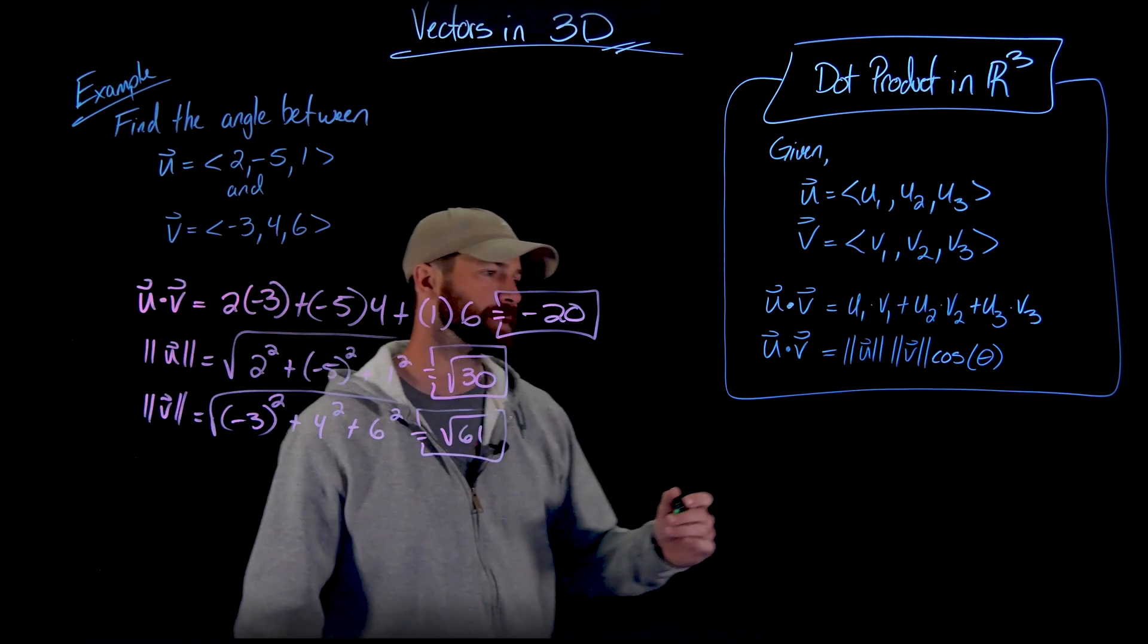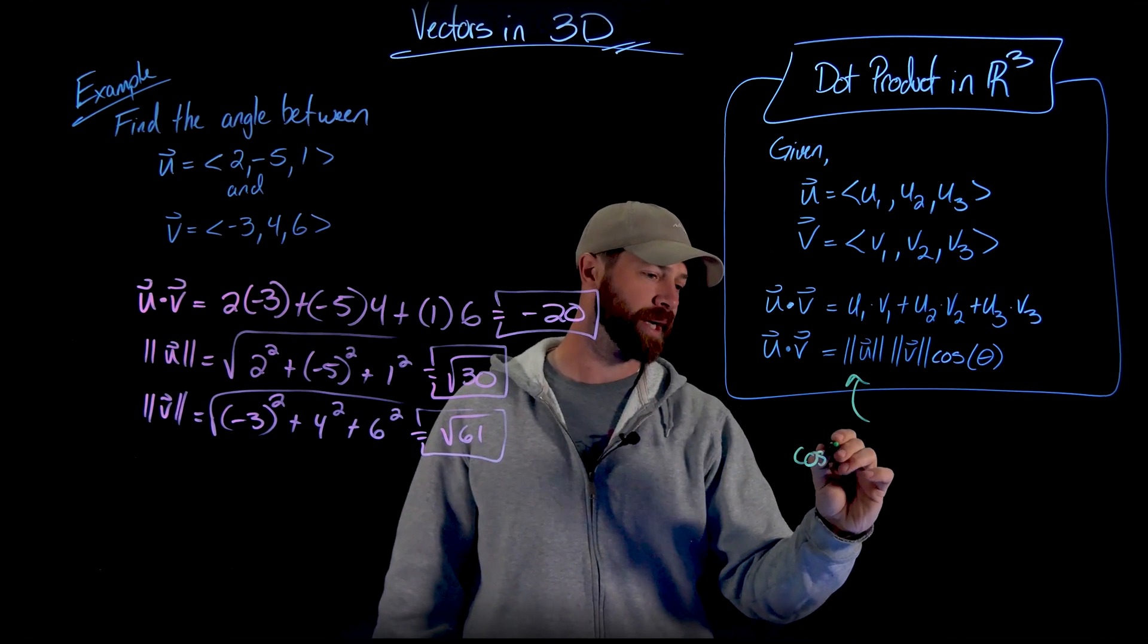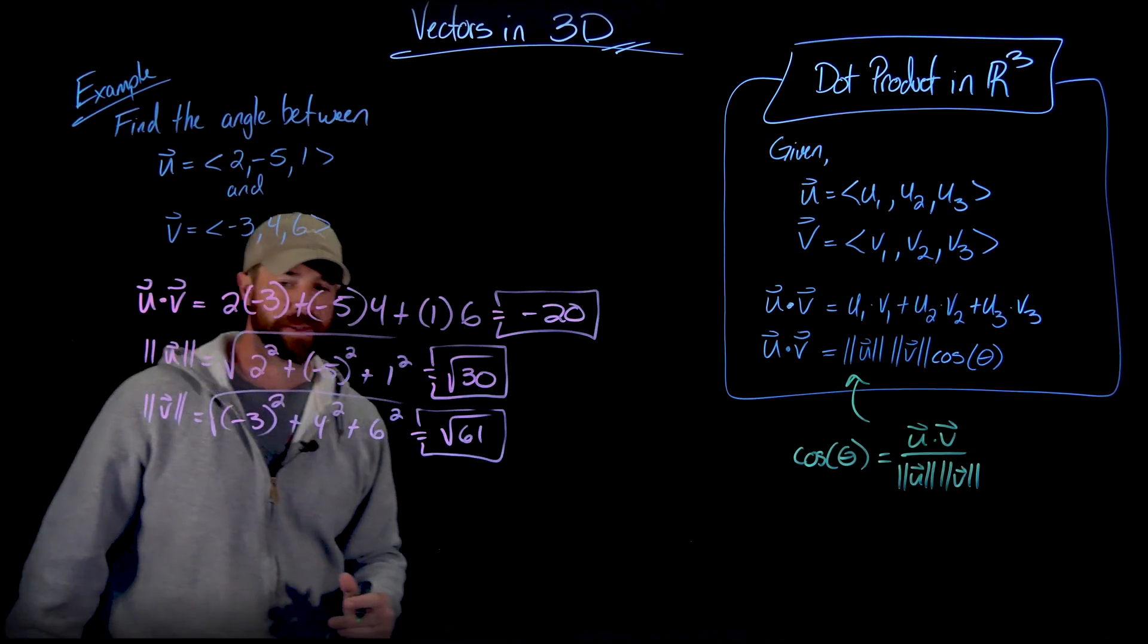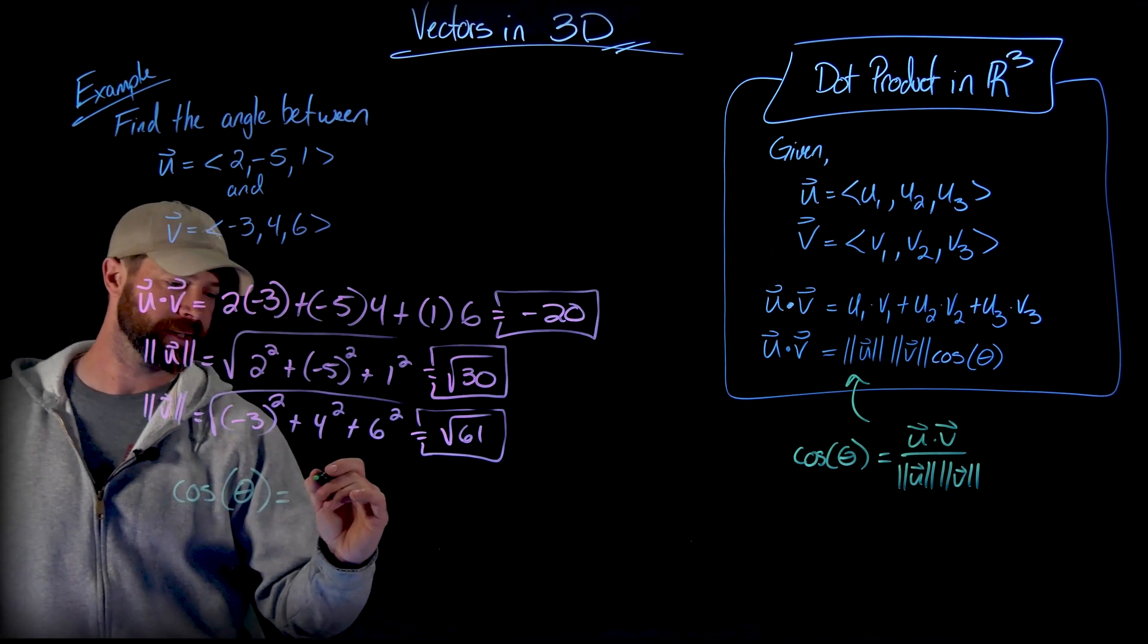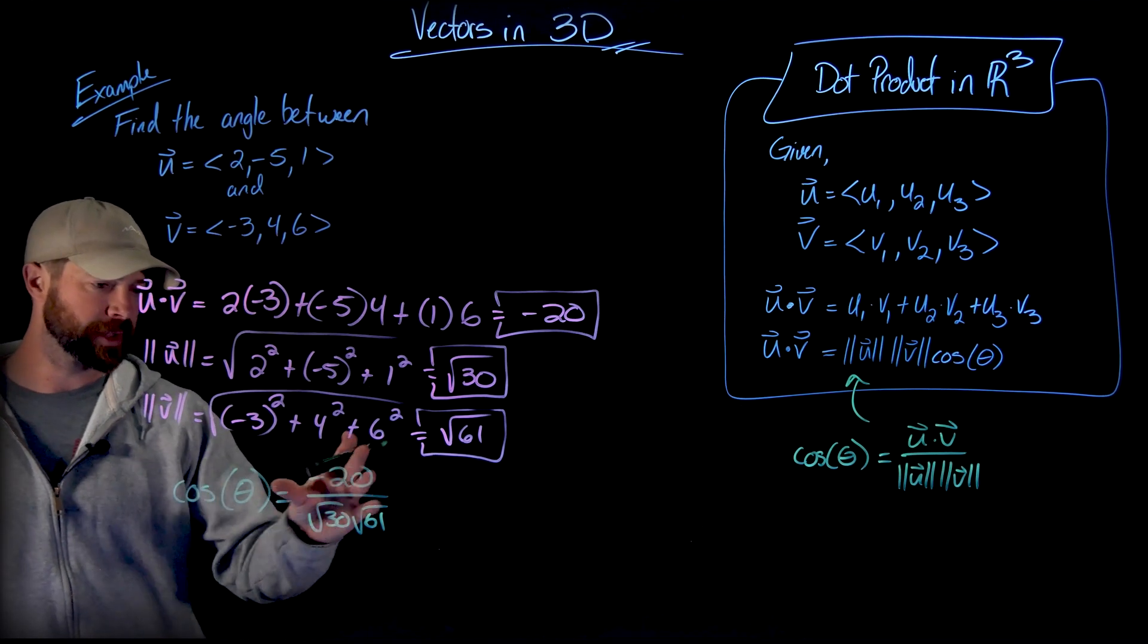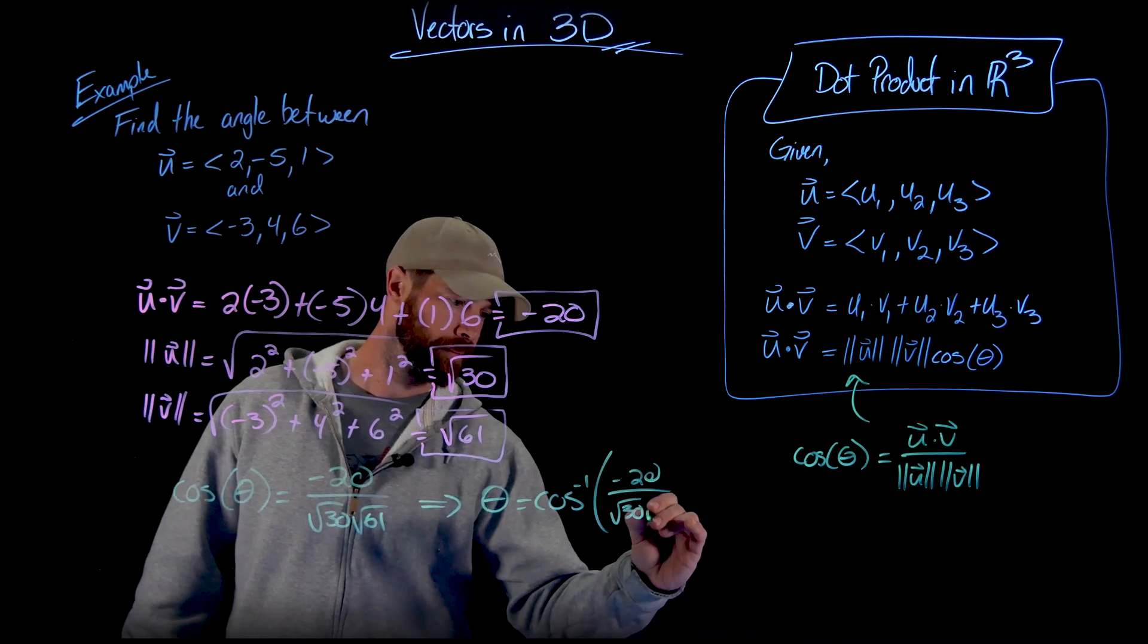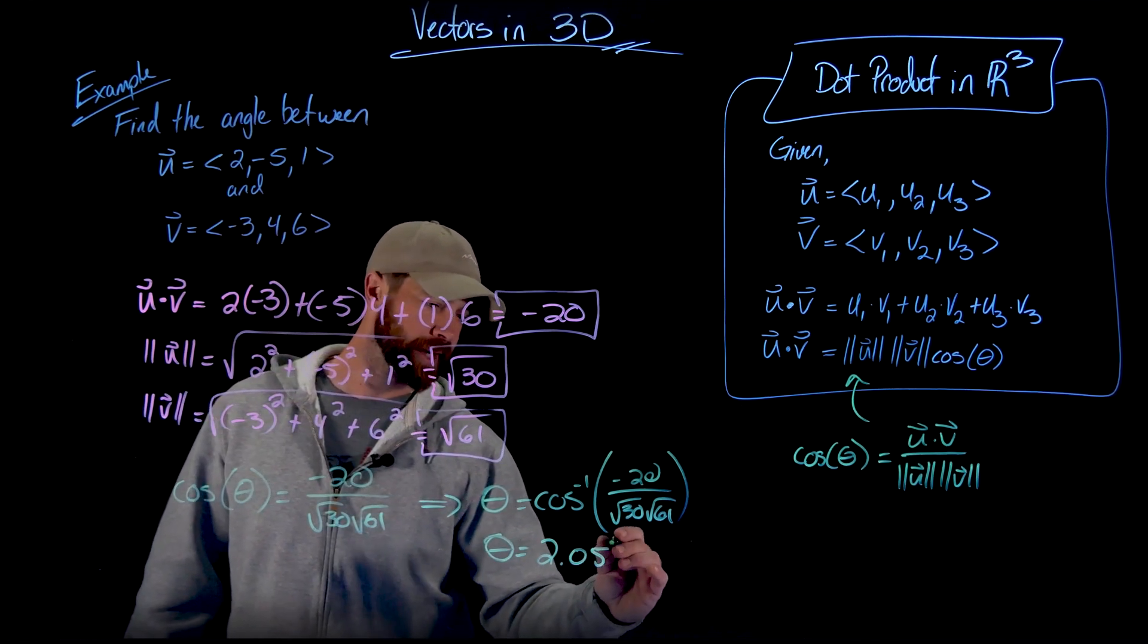So next up, to find the angle, what I'm going to do is use a manipulated version of this equation. If I divide both sides by the magnitude, I have the cosine of the angle between the two vectors to be the dot product divided by the magnitudes of these vectors. And so over here, the cosine of the angle between these two vectors is the dot product, which is negative 20, divided by the square root of 30 times the square root of 61. And then what I'll do is take the cosine inverse of this quantity right here.